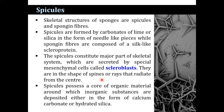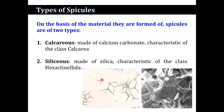Spicules are classified in different ways. On the basis of material, spicules are mainly of two types: calcareous spicules and siliceous spicules. Calcareous spicules are made up of calcium carbonate and are a characteristic feature of the class Calcarea. Siliceous spicules are made up of silica and are characteristic of the class Hexactinellida.